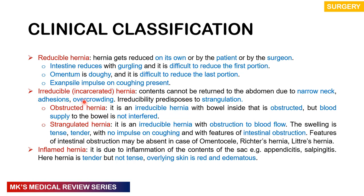It may be irreducible or incarcerated, where contents cannot return to the abdomen. This is due to a narrow neck, adhesions, or overcrowding. Irreducibility predisposes to strangulation — do not confuse irreducible hernias with strangulated hernias. Strangulation is usually a complication of irreducible hernias, where there is obstruction to blood flow. Whenever blood flow is obstructed, there is swelling, tenderness, tenseness, and the cough impulse will be absent. Most of the time you also get features of intestinal obstruction.